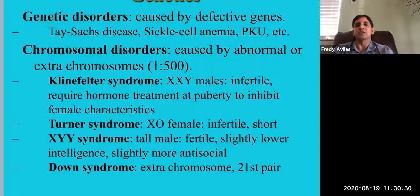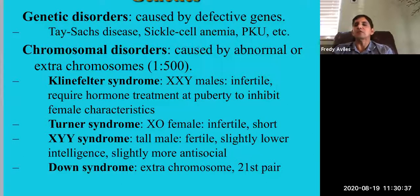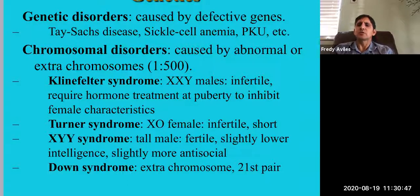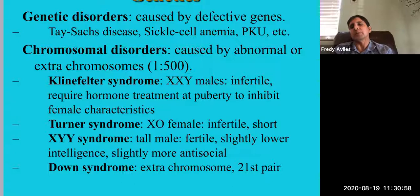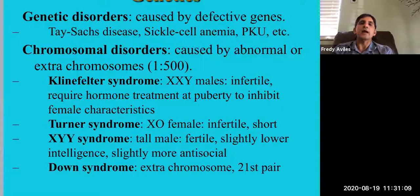Turner syndrome involves sex chromosomes of XO — one X and nothing else, no Y and no second X. Because there's no Y, this is a female. Those with Turner syndrome tend to be infertile and short. My cousin's daughter has Turner syndrome — she can't reproduce and doesn't get her period naturally, though hormonal treatment at puberty can help. They tend to be short and have a stocky build.